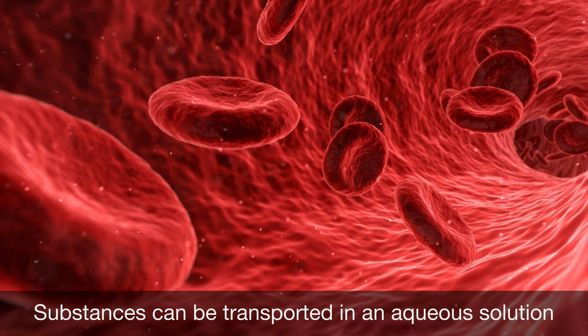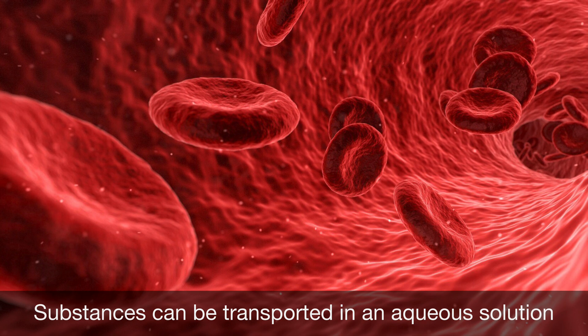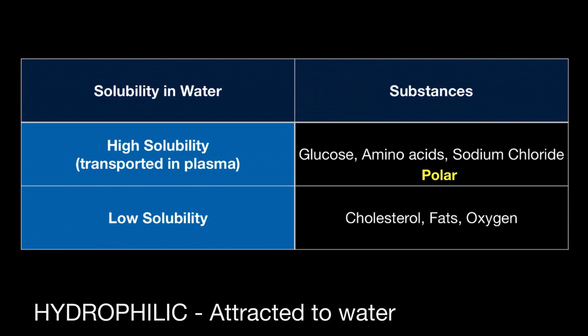A diverse range of substances can be transported, but their solubility within the plasma varies. Substances with a high solubility that can be transported within the plasma include glucose, amino acids, and sodium chloride, because these substances are polar. Glucose and amino acids are polar molecules, while sodium chloride is an ionic compound. Substances such as these that are polar and therefore chemically attracted to the polar water molecule are known as hydrophilic.